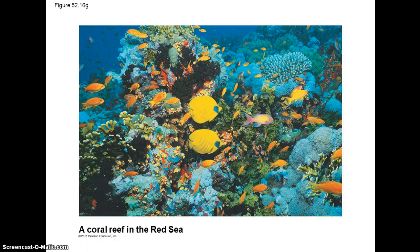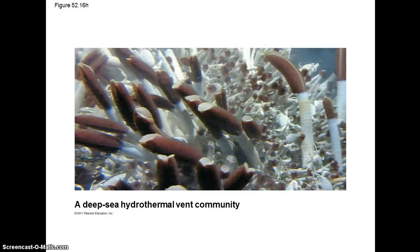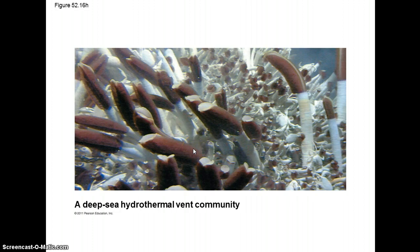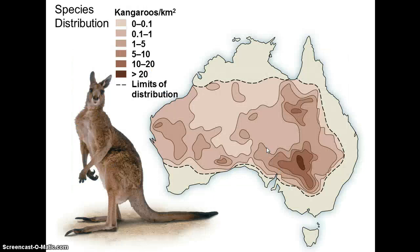Coral reefs are quite diverse, again found in tropical areas, dominated by corals — a type of cnidarian with a shell that lives in colonies. Their shells build up over time to form the reef. Deep sea thermal vents are unique habitats in perpetual darkness deep in the ocean. There you find tube worms and white crabs lacking pigmentation because there's no light. The tube worms are red due to hemoglobin in their blood. At these deep sea thermal vents, breaks in the crust allow warm water to seep out of the seabed, bringing lots of nutrients with it.